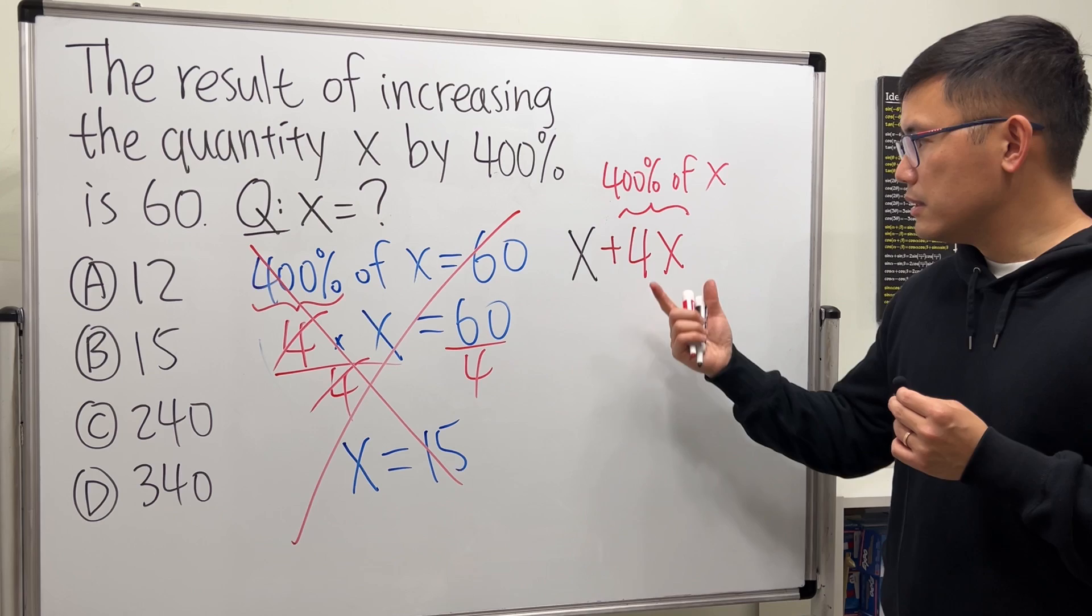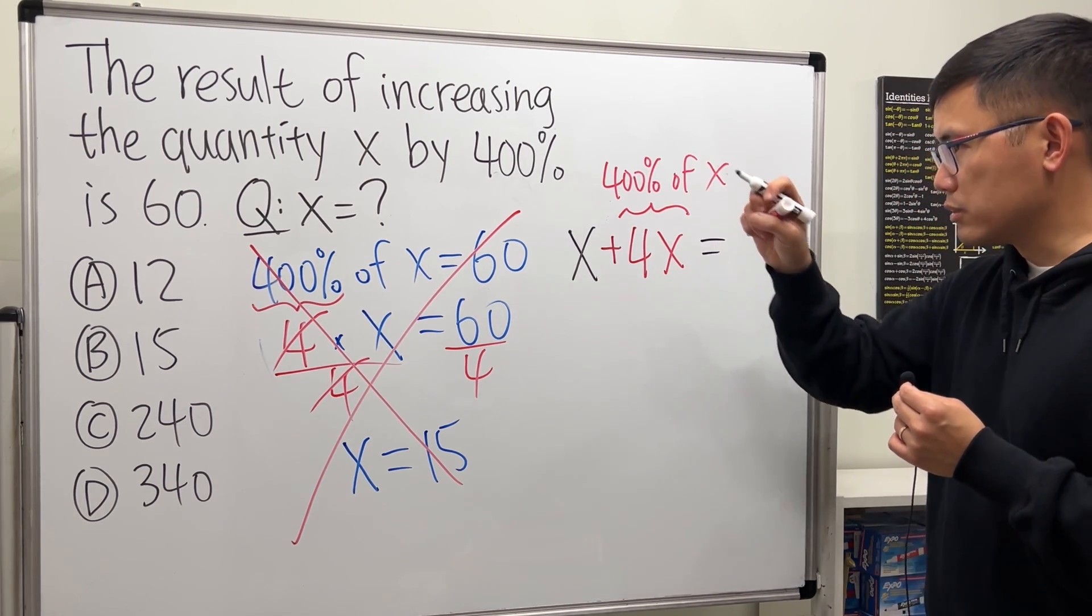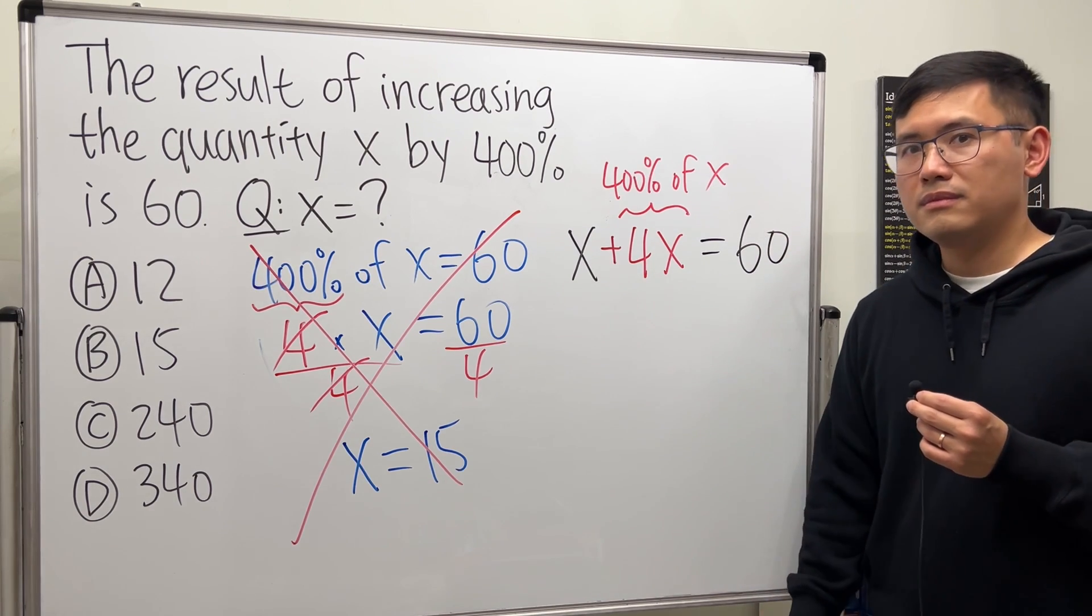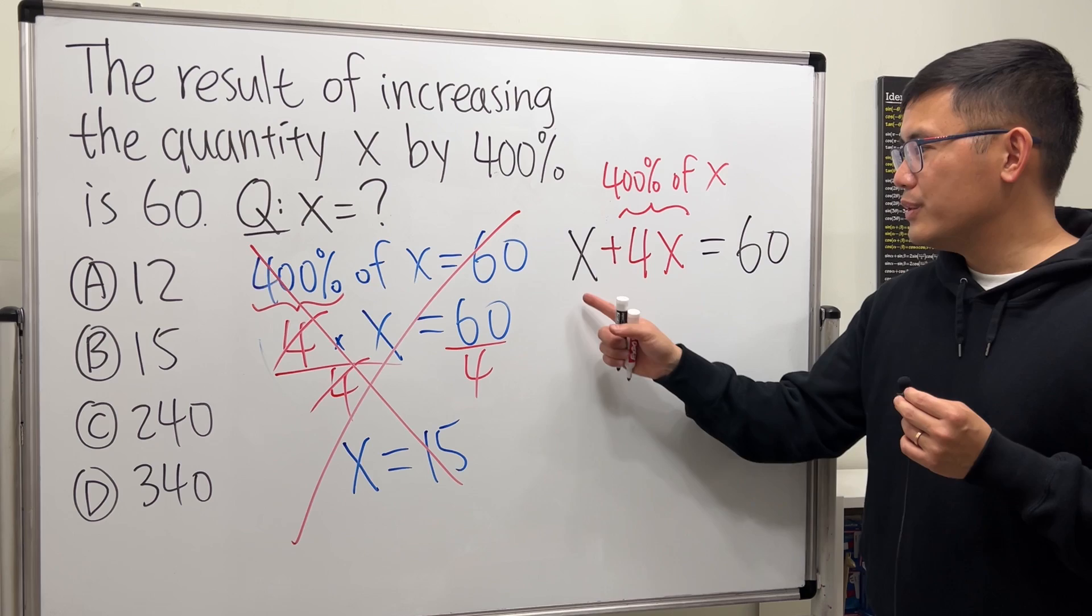From here you can combine like terms: 1x plus 4x gives us 5x, and that's equal to 60.